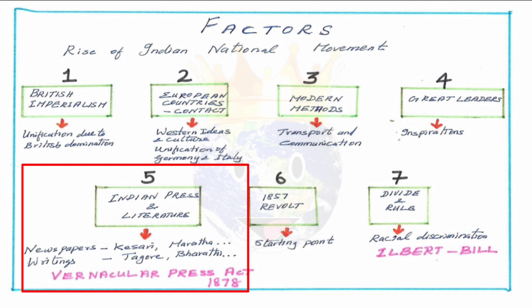The fifth factor is the Indian press and literature, which was the backbone of the Indian people. Whatever they wanted to express, they expressed through press and literature. Newspapers like Kesari, Maratha, and the writings of Tagore, Bharati, and Bankim Chandra Chatterjee inspired people and brought patriotic feeling. However, the Vernacular Press Act of 1878 was passed to limit the freedom of the press, preventing Indians from publishing freely, which created more agitation and unrest among the Indian people.